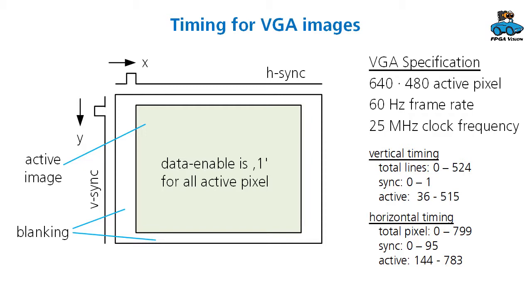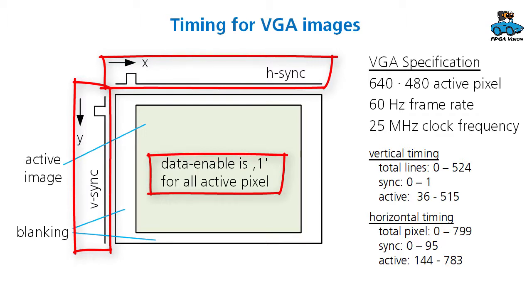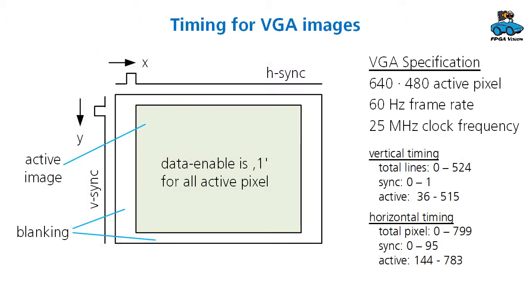In addition to the visible active image we also have an invisible part which is called blanking, present in horizontal and vertical direction. To indicate the position of the image we have control signals which are horizontal sync and vertical sync. There is a data enable that is one for all active pixels. For 60 Hz frame rate we need a 25 MHz clock frequency. Here you find the timing information for vertical and horizontal timing.